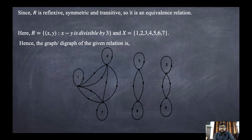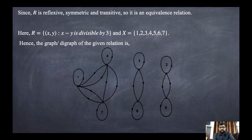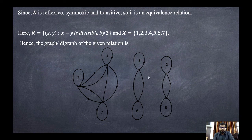Continuing: 2 minus 5 equals minus 3, divisible by 3, so (2,5) and (5,2) are in R. Then 3 minus 6 equals minus 3, divisible by 3, so (3,6) and (6,3) are in R. All other pairs — such as (4,5), (4,6), (5,6), (6,7) — do not satisfy divisibility by 3. So the complete graph has seven self-loops and three bidirectional edge pairs: {1,4}, {1,7}, {2,5}, and {3,6}.